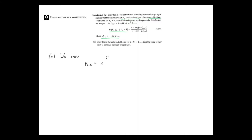This survival probability equals e to the power minus the integral from 0 to 1 of the force of mortality, which is in this case constant. Since it's constant, we can take it out of the integral. So this is minus μ* x+k, and then integrate 0 to 1 ds, which is just 1. So this gives us e to the minus μ* x+k. The survival probability is simply e to the power minus the force of mortality, when it's constant.